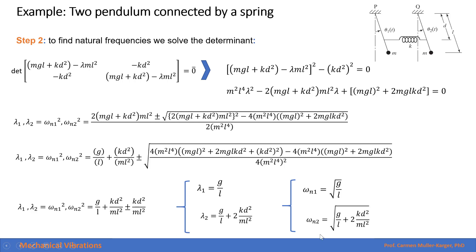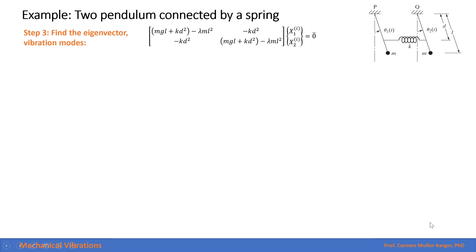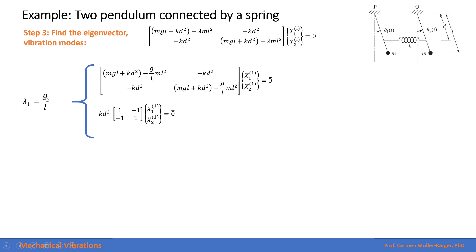The second eigenvalue leads to the second natural frequency, which is the square root of that eigenvalue. Step 3 is to find the eigenvectors or vibration modes. We introduce each eigenvalue into the matrix and find the vibration amplitudes. For the first eigenvalue, g over L, we input the value, simplify, and notice that the kd-squared terms cancel, leaving a matrix with two equations that are the same equation — so we find a relationship between the two amplitudes.